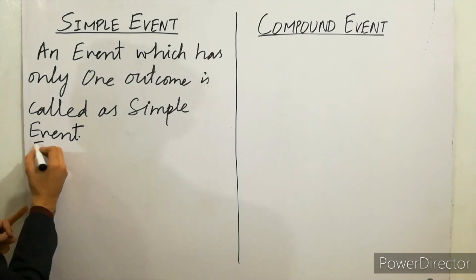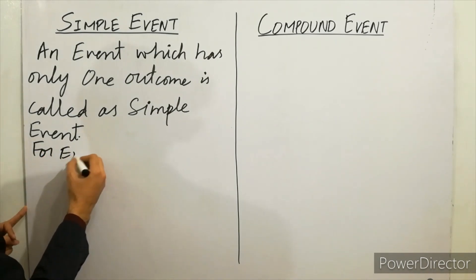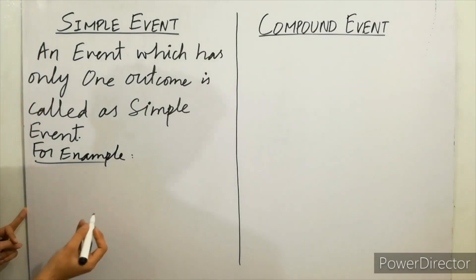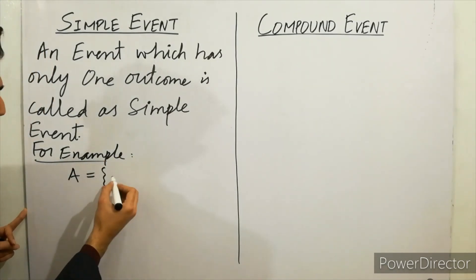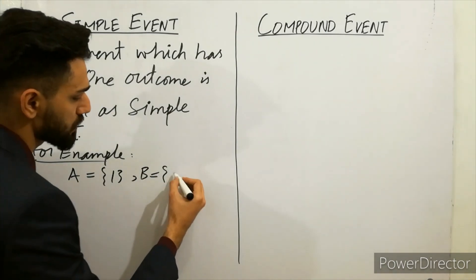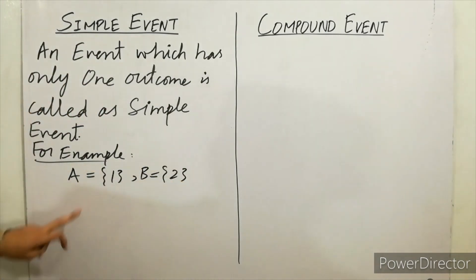You can take an example. For example, I take the example very easy. You can take here A is equal to 1. You can take an example B is equal to 2.